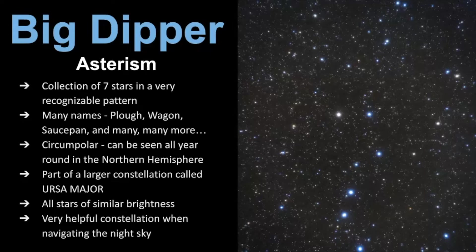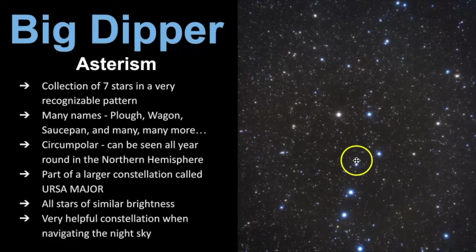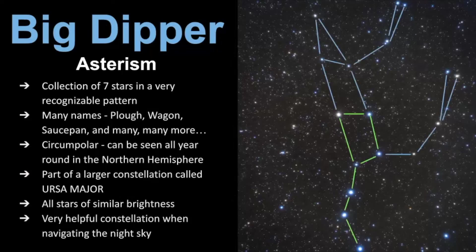Now we'll go over the specifics of the Big Dipper asterism. It is a collection of seven stars in a very recognizable star pattern, and it has many names depending on where you live and which point in history you look at — some names include the Plow, the Wagon, the Saucepan, and many others. In the United States, it's known as the Big Dipper. This is a circumpolar star pattern, which means it can be seen all year round in the northern hemisphere. The Big Dipper is really a part of a larger constellation called Ursa Major.